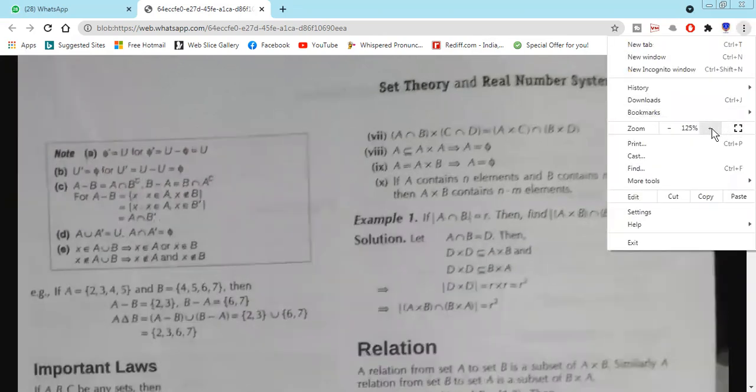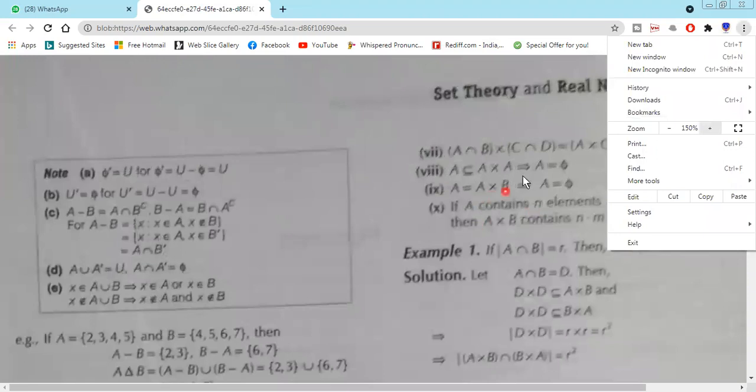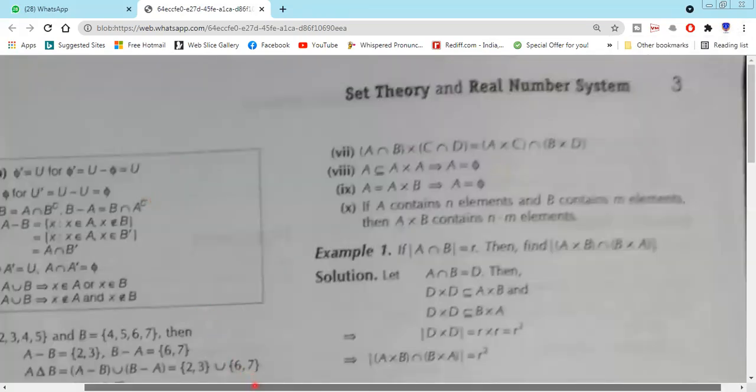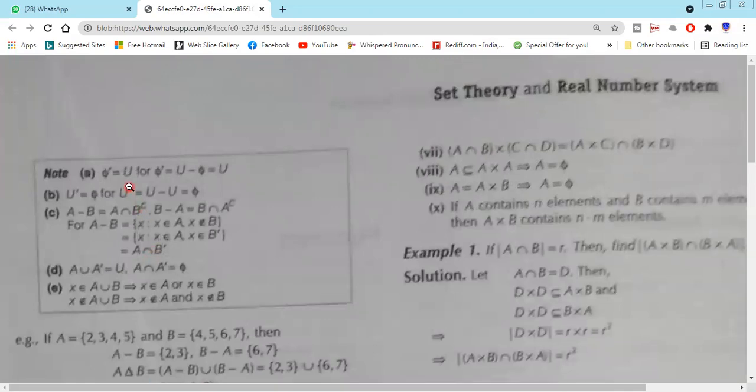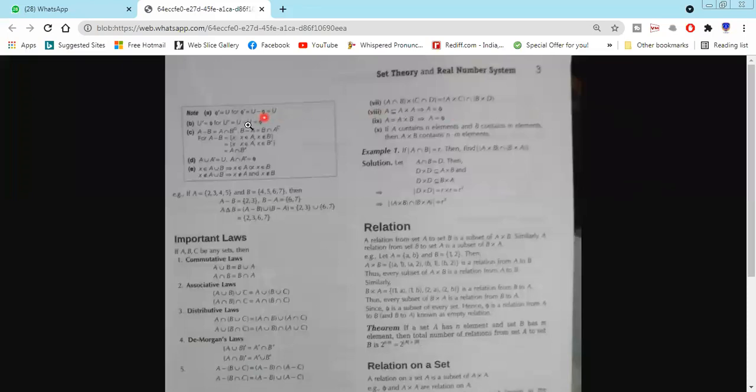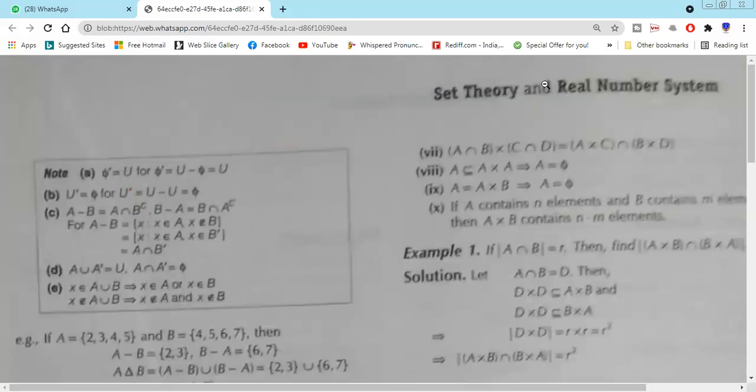Take a look at the property. φ' equals μ. φ' equals μ minus φ, which is μ. That means the complement of the empty set is the universal set, because we know that φ' equals μ minus φ, and μ minus φ is nothing but μ.